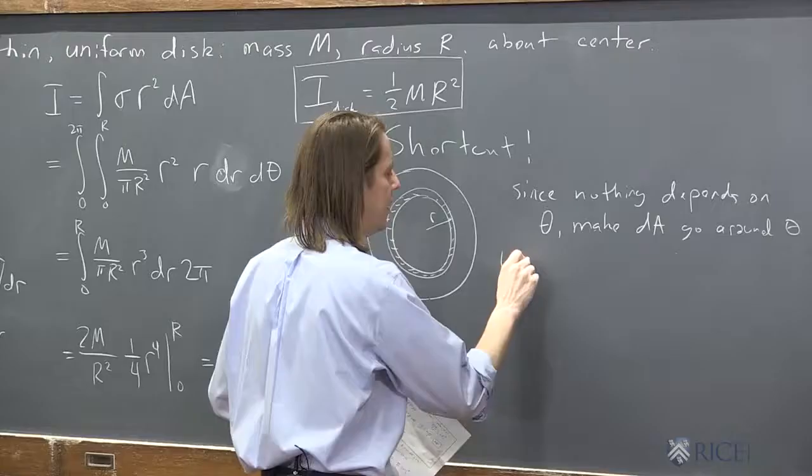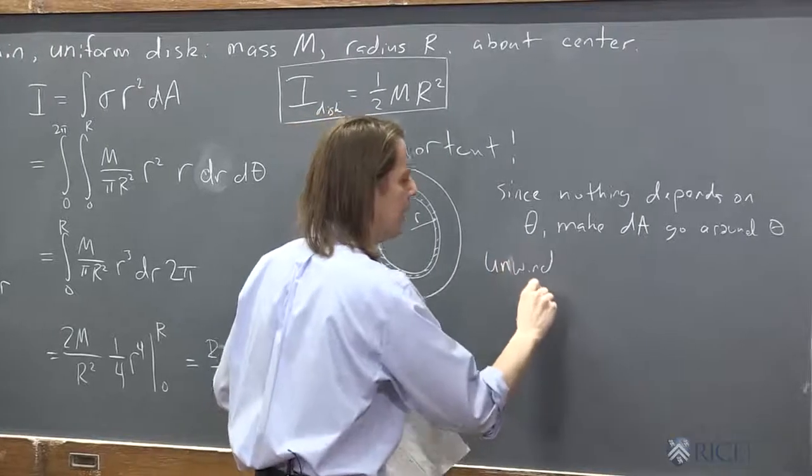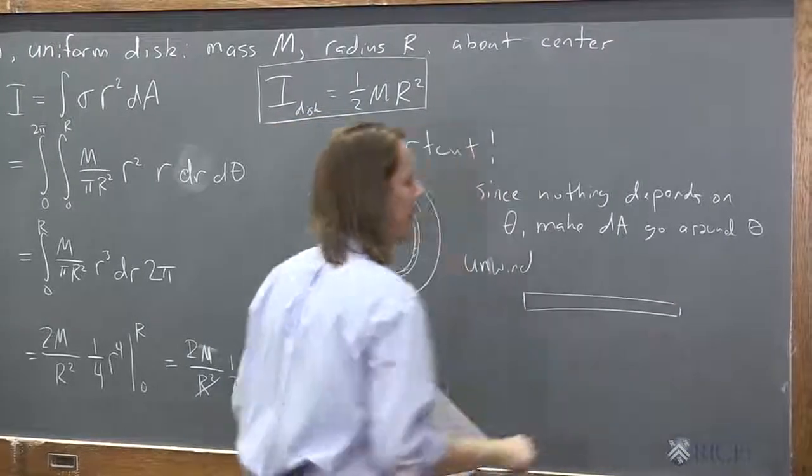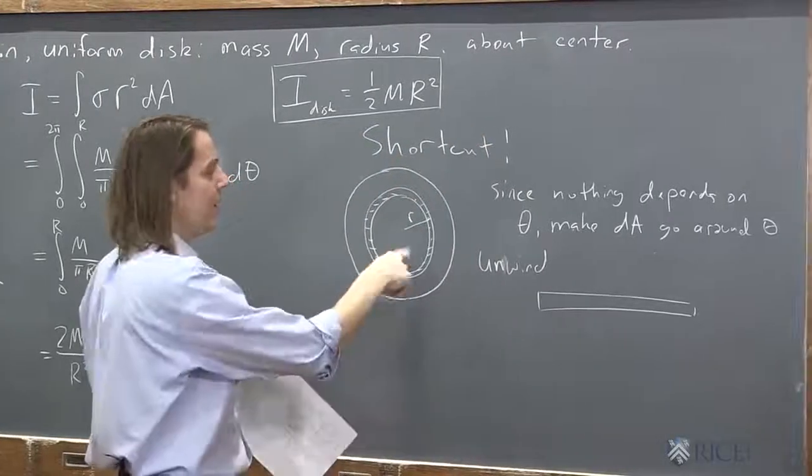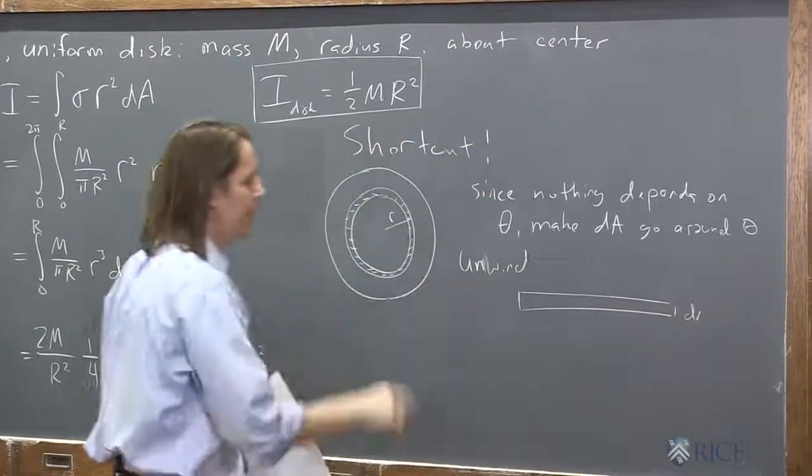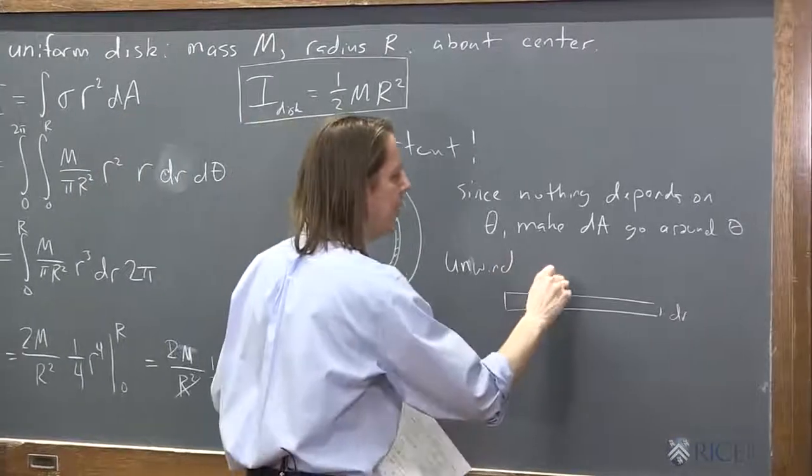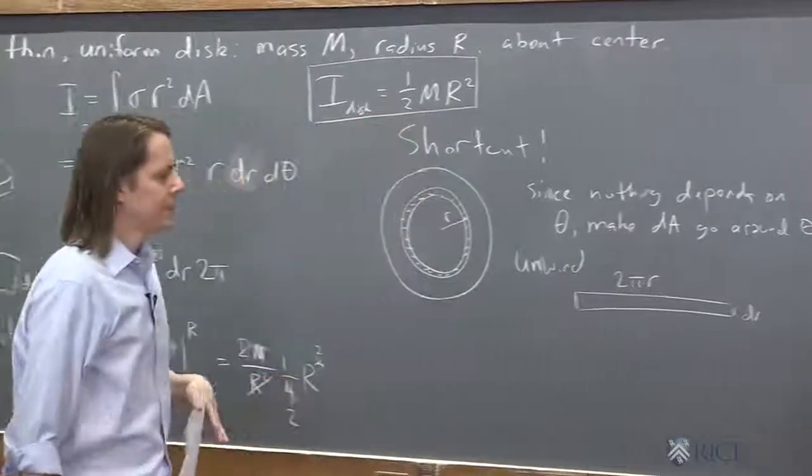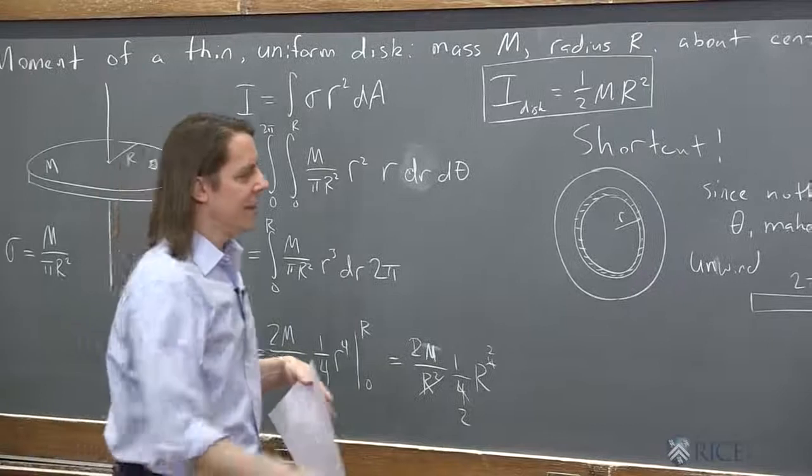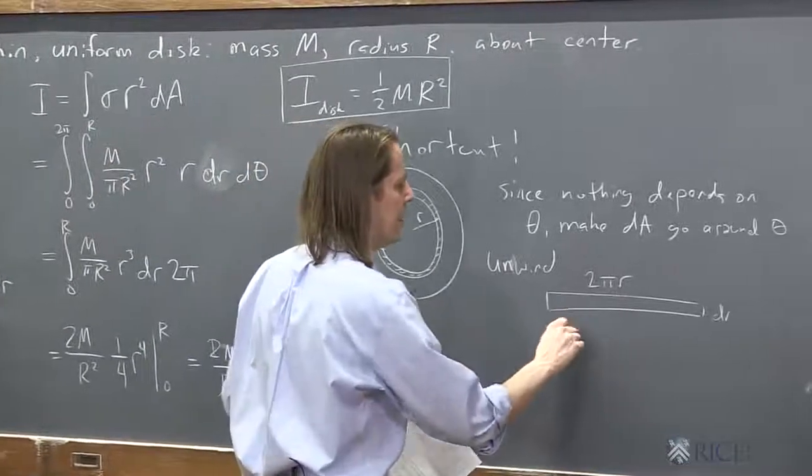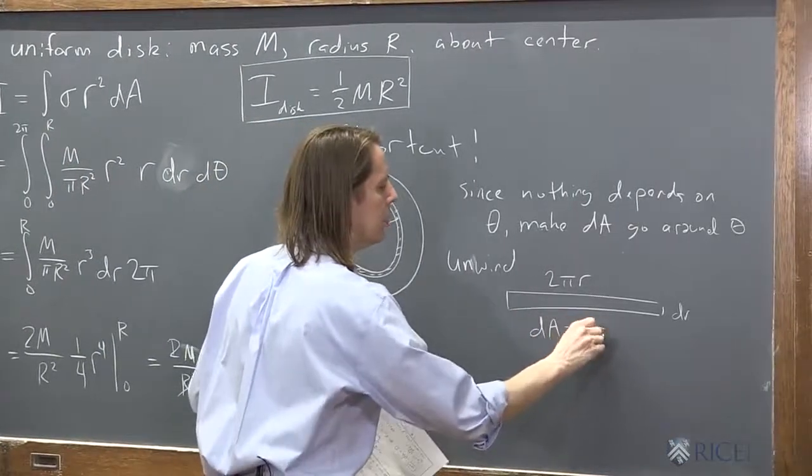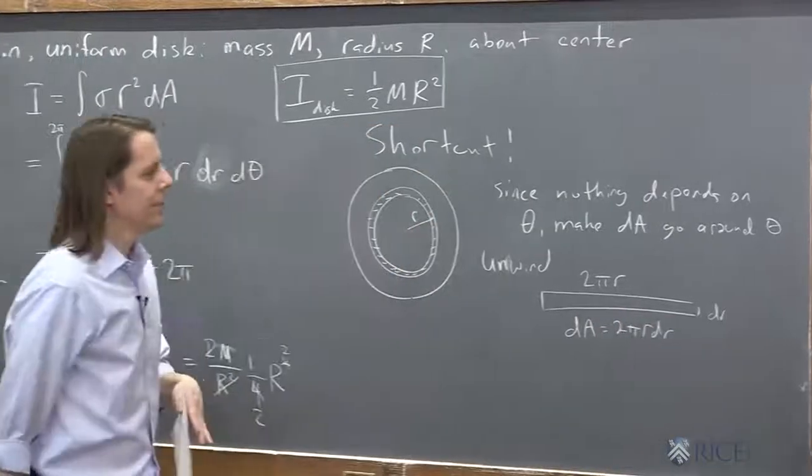And then you just unwind it. Let me help you unwind here. And it makes a little strip that's like a rectangle. And you say, what's the width of the rectangle? dR. What's the length of the rectangle? 2 pi R. And then dA, therefore, is 2 pi R dR. All right.